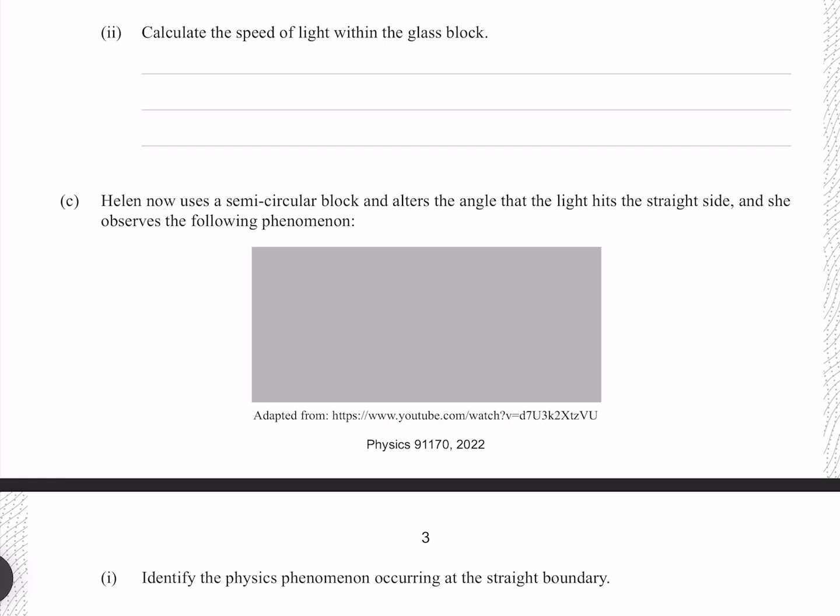Calculate the speed of light within the glass block. The equation for the refractive index of a material is c divided by the velocity of the wave in that material, where we can solve for v by swapping the n and the v. Putting our numbers in. Gives me 1.97 times 10 to the 8 meters per second to three significant figures.